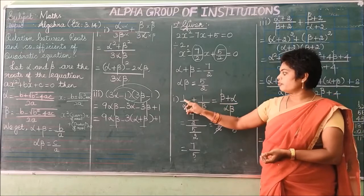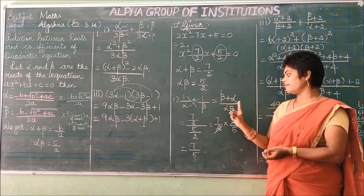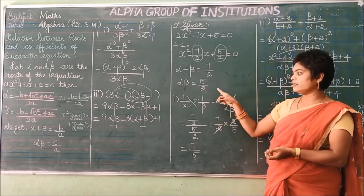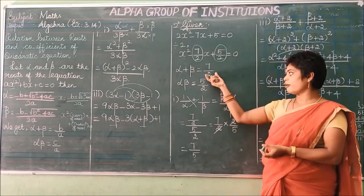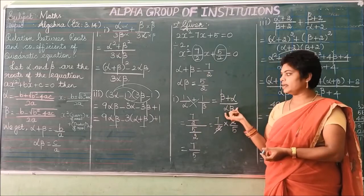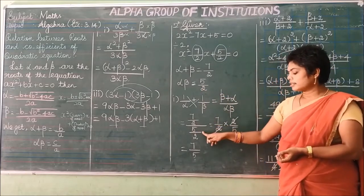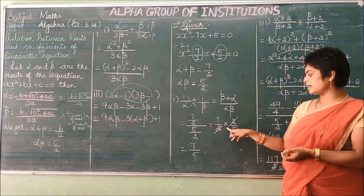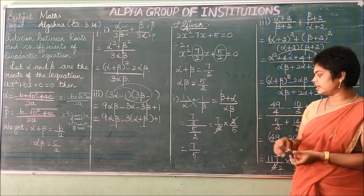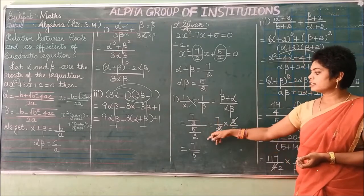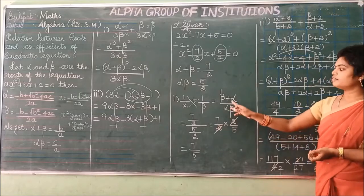First subdivision: find 1/α + 1/β. Using cross multiplication, you get (β + α) / (αβ). Beta plus alpha is the same as alpha plus beta. Applying values: (7/2) ÷ (5/2). Change division to multiplication with the reciprocal: (7/2) × (2/5). The 2s cancel, giving the final answer 7/5.